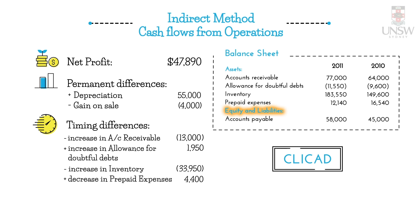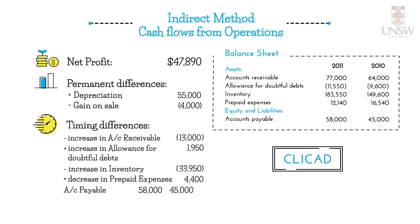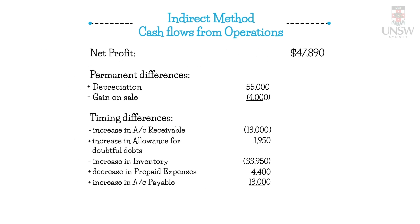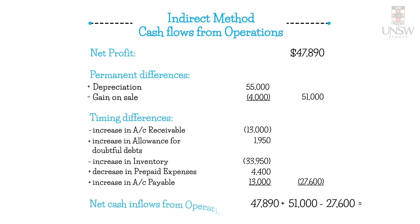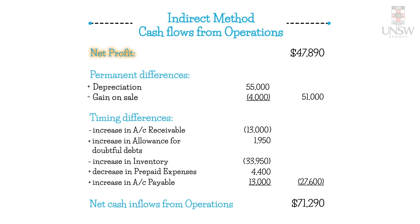Looking at current liabilities, accounts payable has an ending balance of $58,000 and an opening balance of $45,000 — it increased by $13,000. A current liability increasing follows ClickCloud, so we add: add increase in accounts payable $13,000. That's our final timing difference. Adding together all permanent differences and timing differences and adjusting net profit of $47,890 results in net cash inflows from operations of $71,290, successfully transforming the accruals-based net profit into a cash flow number.